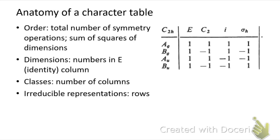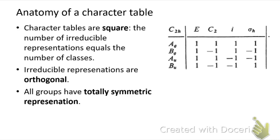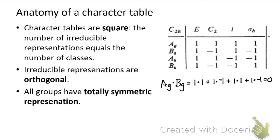Some other observations about character tables: they're all square matrices — the number of irreducible representations, the rows, equals the number of classes, the columns. Those irreducible representations are also orthogonal, meaning they don't overlap with each other. Mathematically, we can show this by multiplying them: for example, Ag times Bg gives one times one plus one times negative one plus one times one plus one times negative one equals zero.